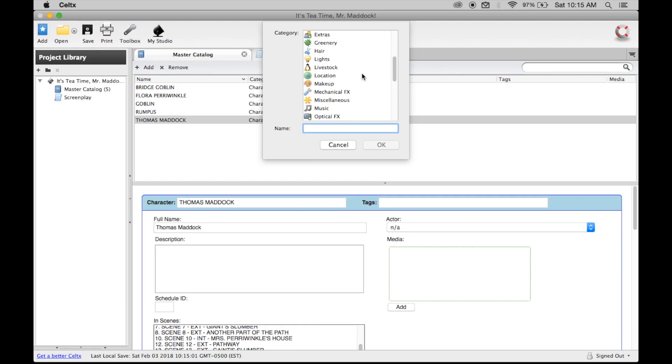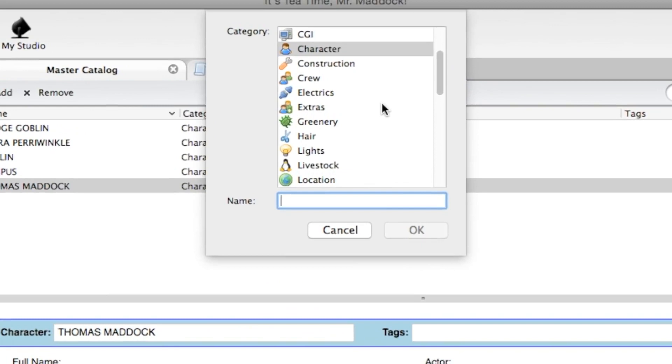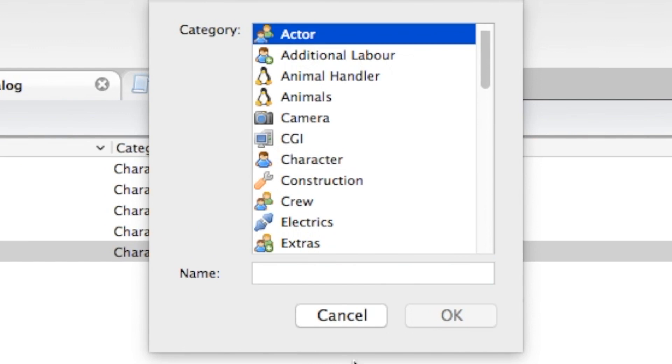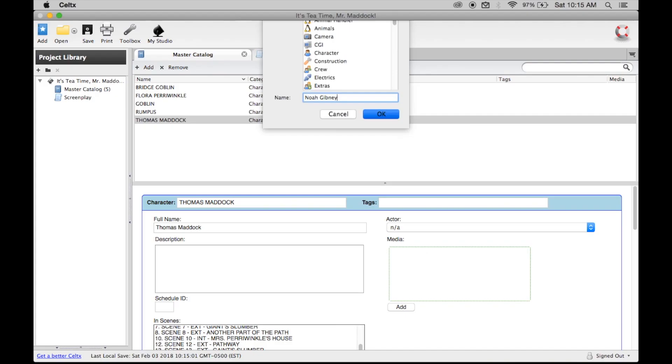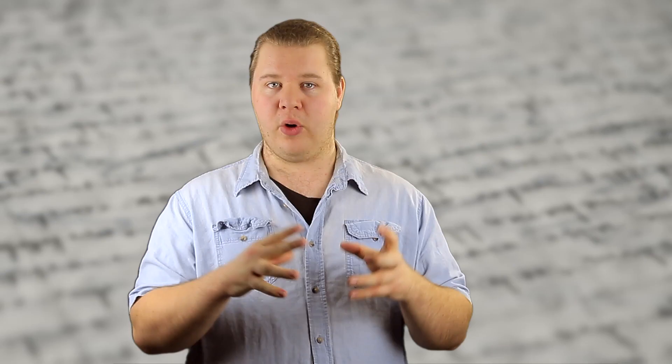But then when you go to your master catalog, you can start creating a list of the locations, of the characters, of certain crew, of actors. You can put in all the detail you want and it's a great way to keep everything organized, particularly as a writer.